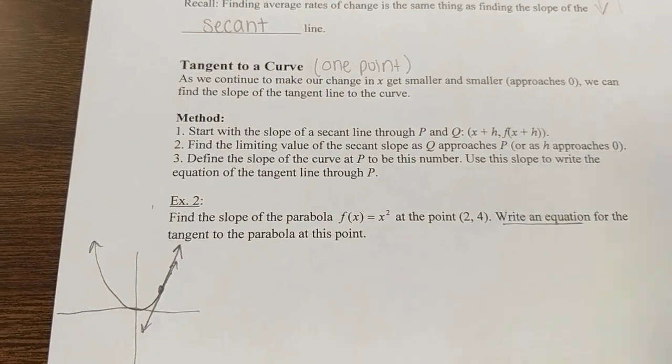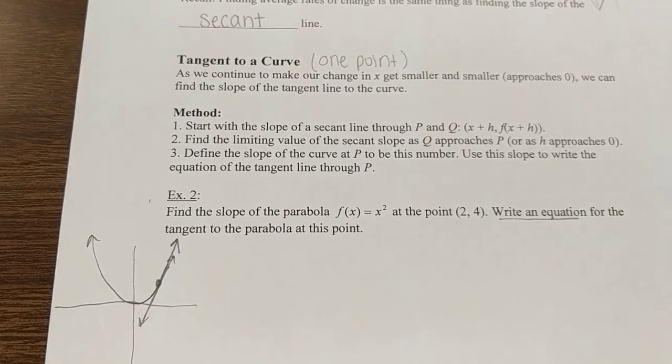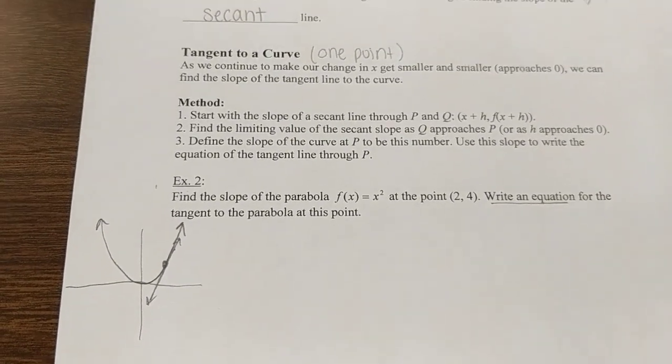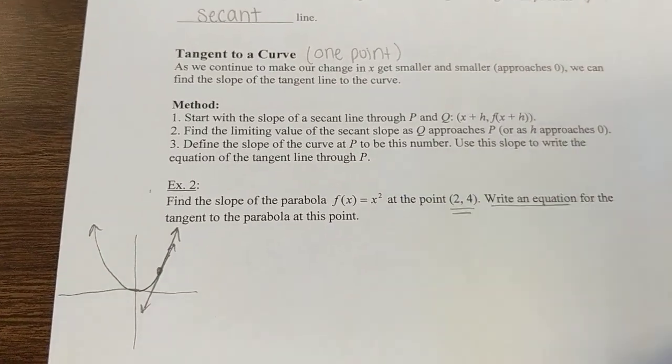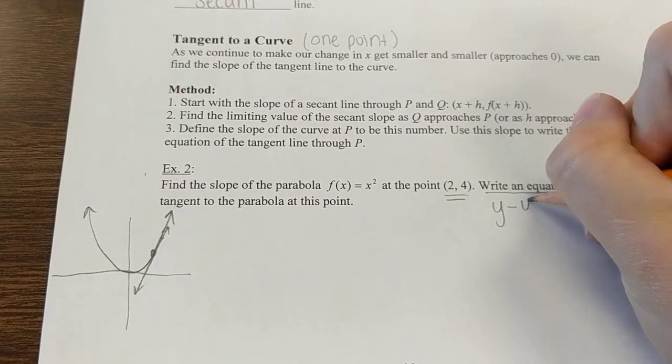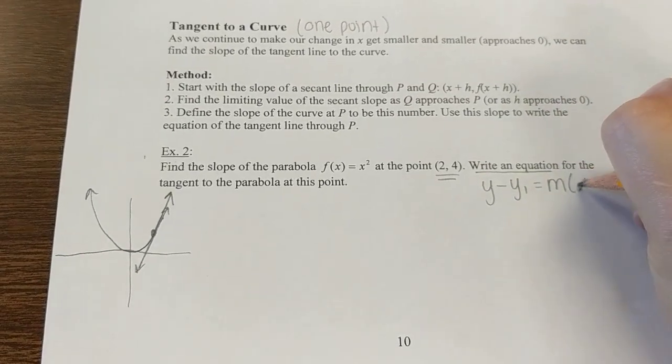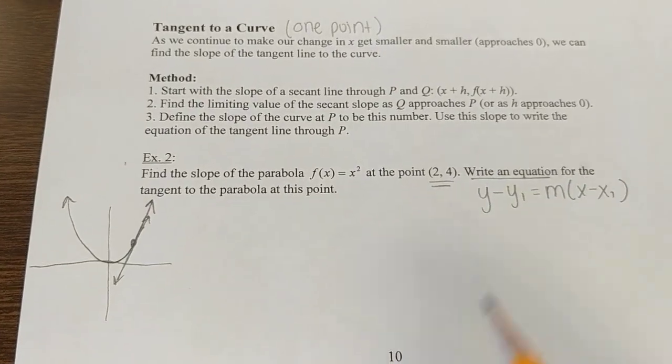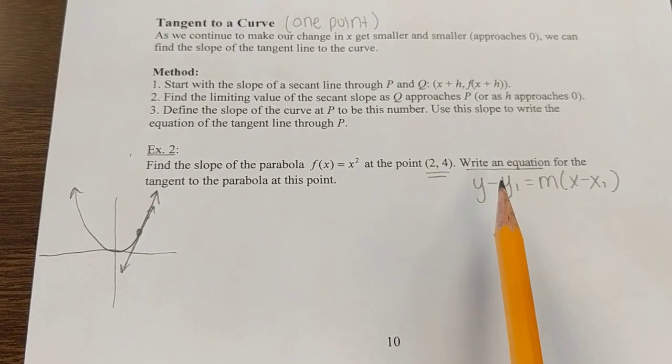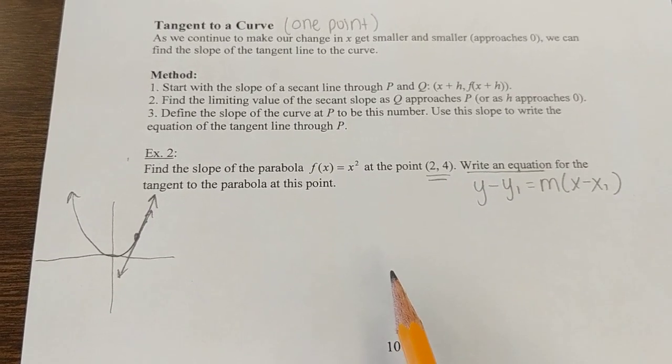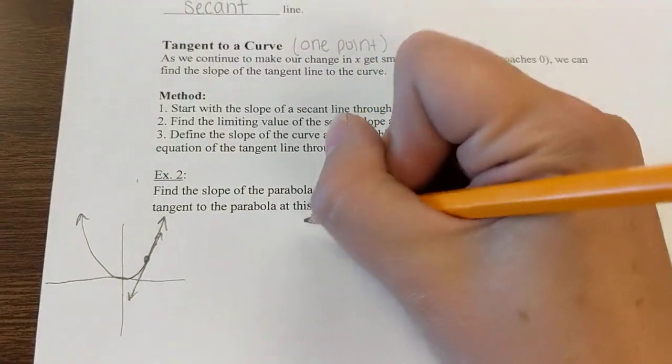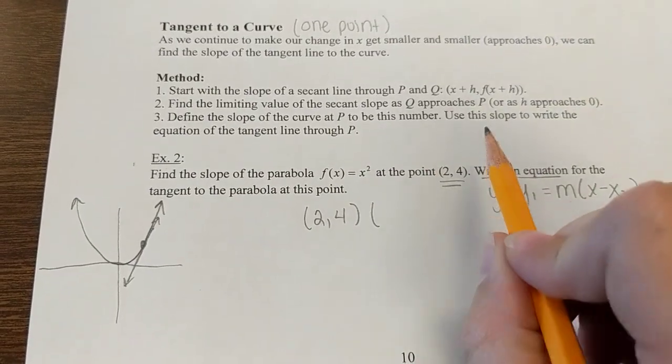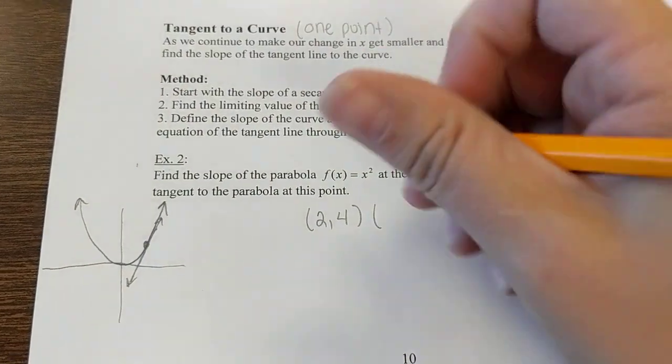It says write an equation for the tangent line. There are two things we always need in order to write an equation: we need a point and we need a slope. Here we've got our point, and all equations in this class should be written in point-slope form, because all you need is any point and a slope. I'm halfway there, I've got the ordered pair, I just need to know the slope. Let's do this strategy. Start at (2, 4), and now let's write our second ordered pair. I want to do 2 plus some h value, moving a little bit away from x.